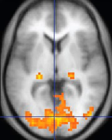An MRI artifact is a visual artifact — an anomaly during visual representation. Many different artifacts can occur during magnetic resonance imaging, some affecting the diagnostic quality, while others may be confused with pathology. Artifacts can be classified as patient-related, signal processing dependent, and hardware related.